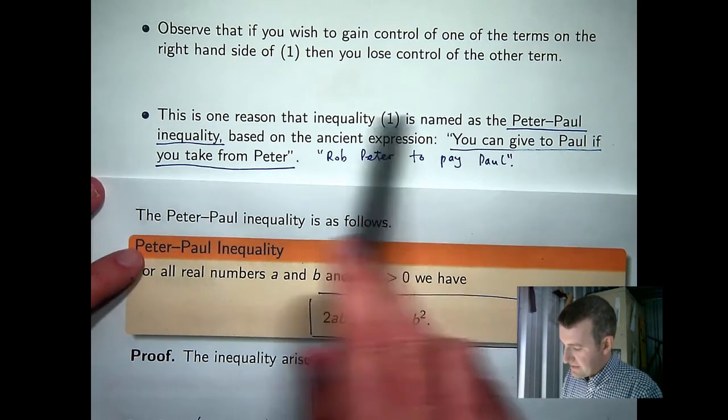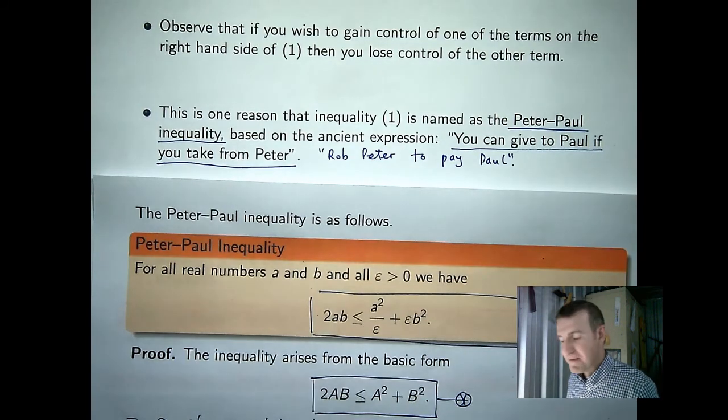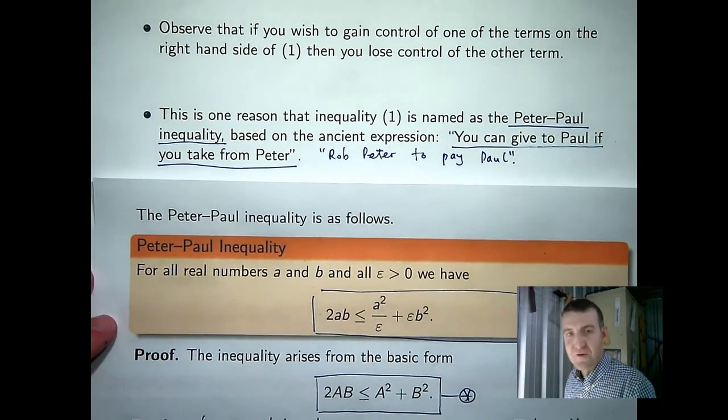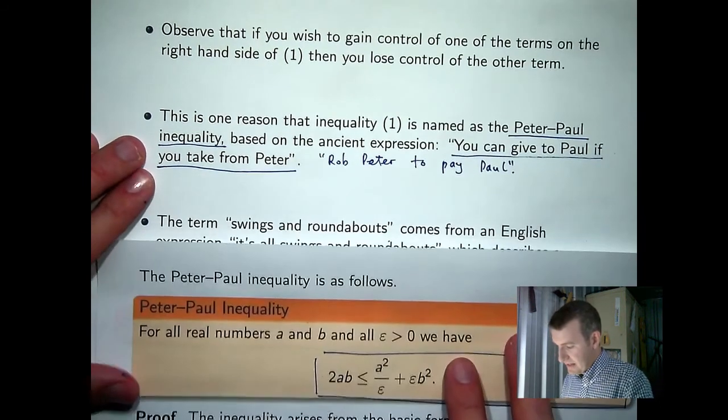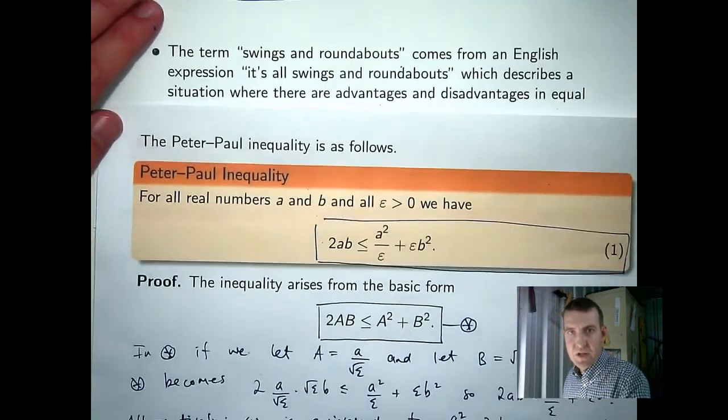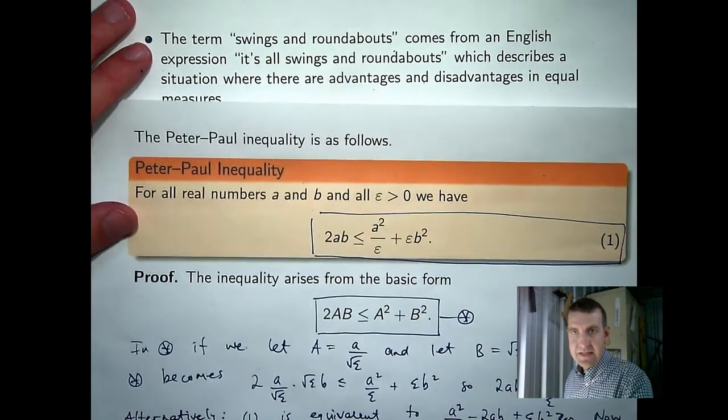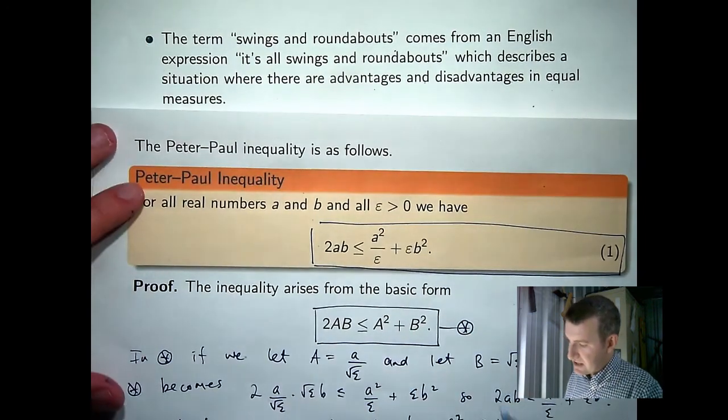Now, like I said, this is an ancient expression. Something that I've been thinking about is perhaps a suggestion for a rewording of the Peter-Paul inequality or renaming of it. And I've come up with the following: Swings and roundabouts. I'd like to call it the swings and roundabouts inequality.